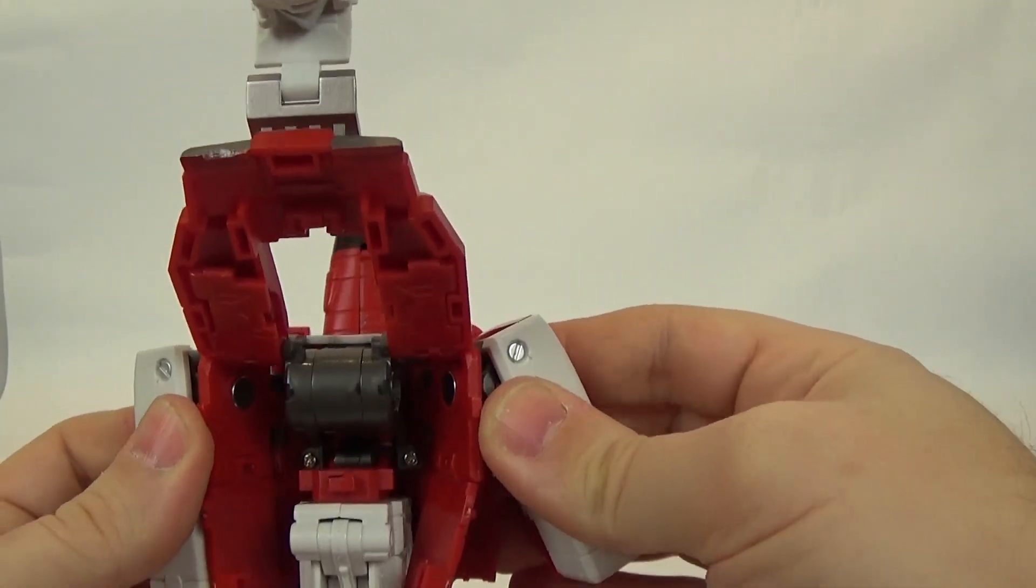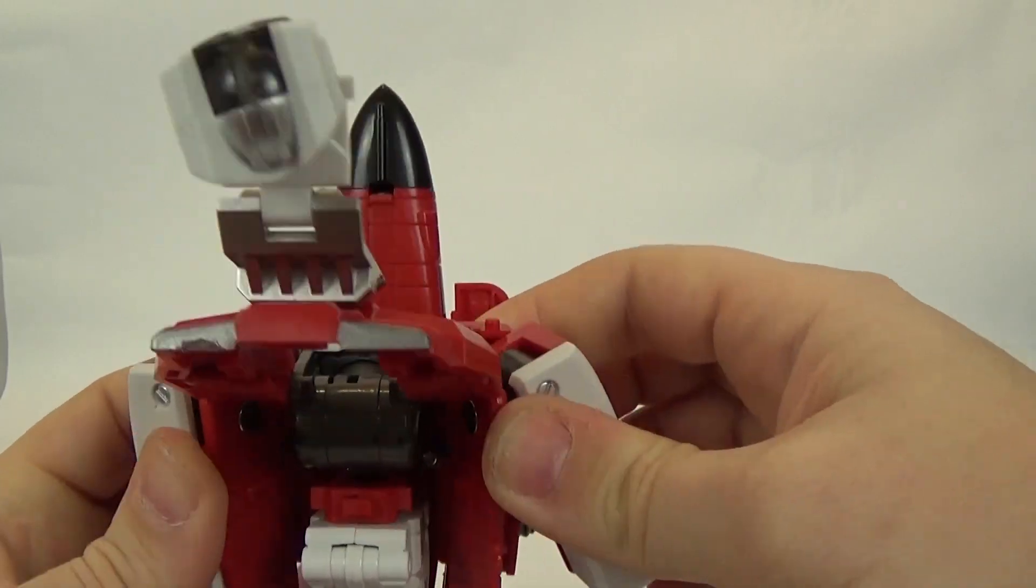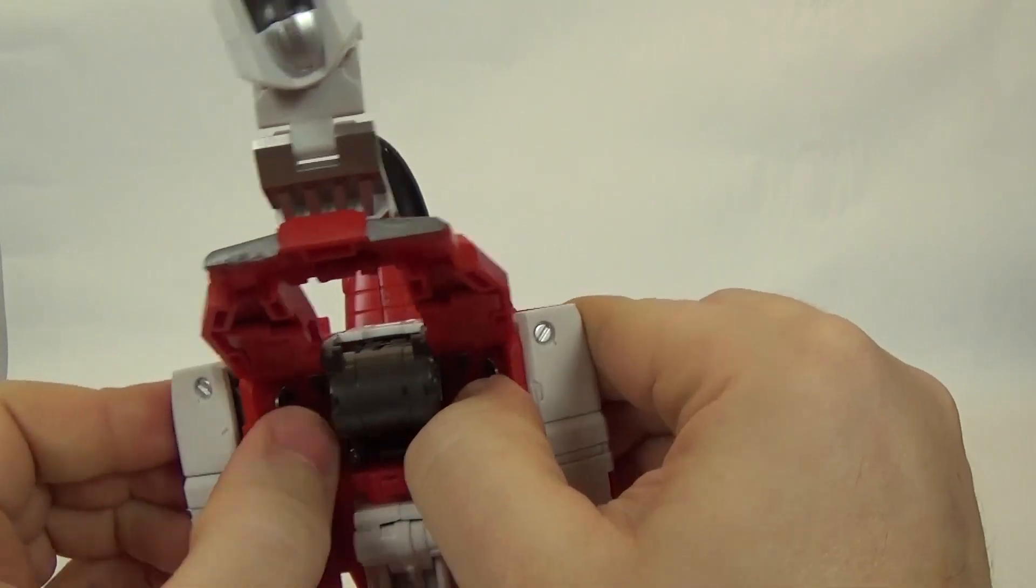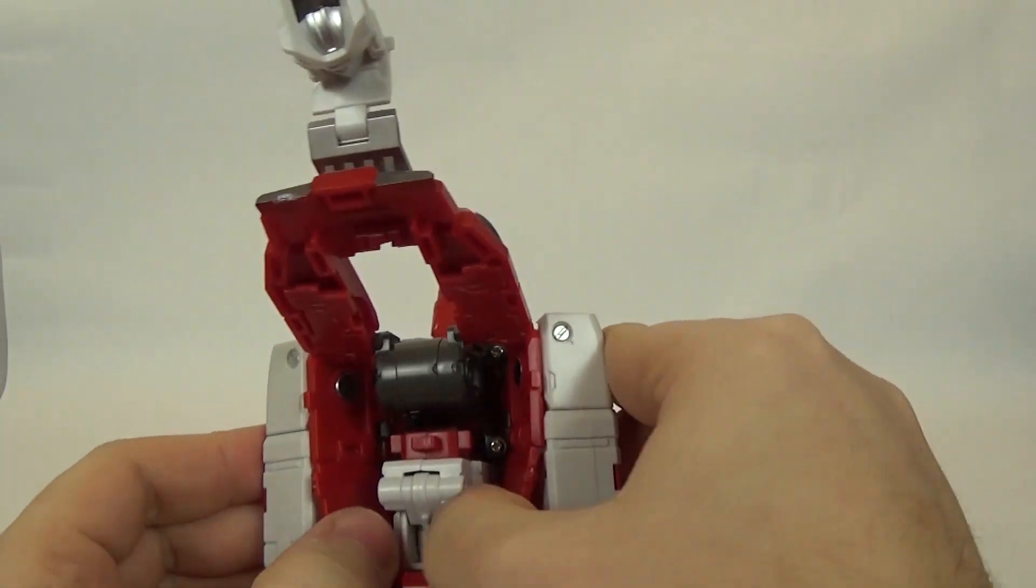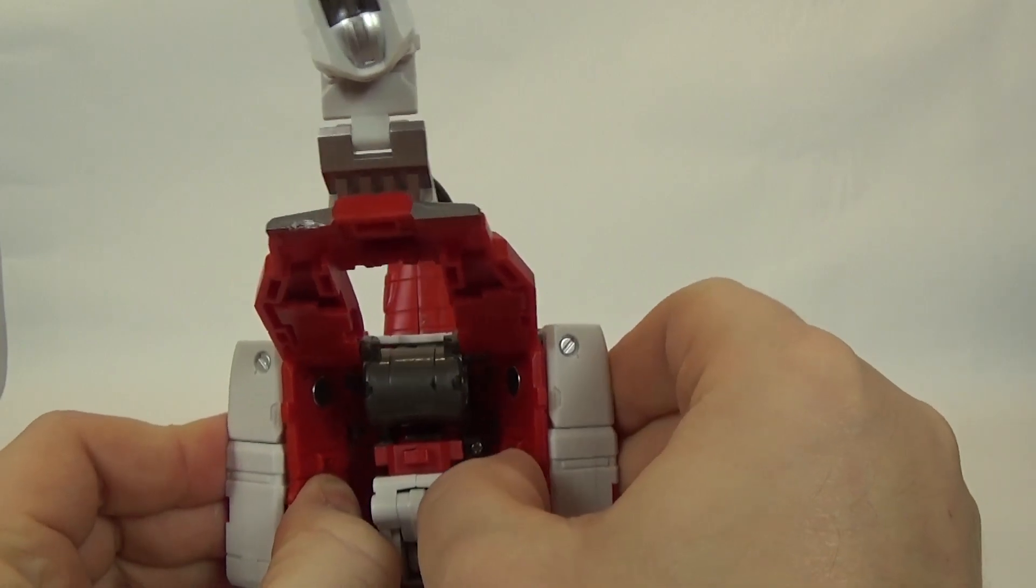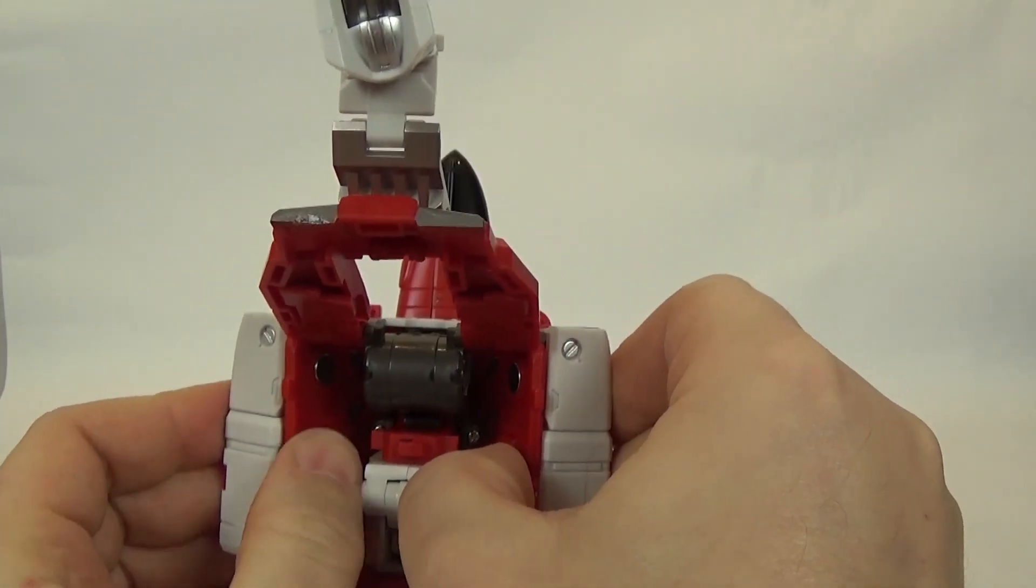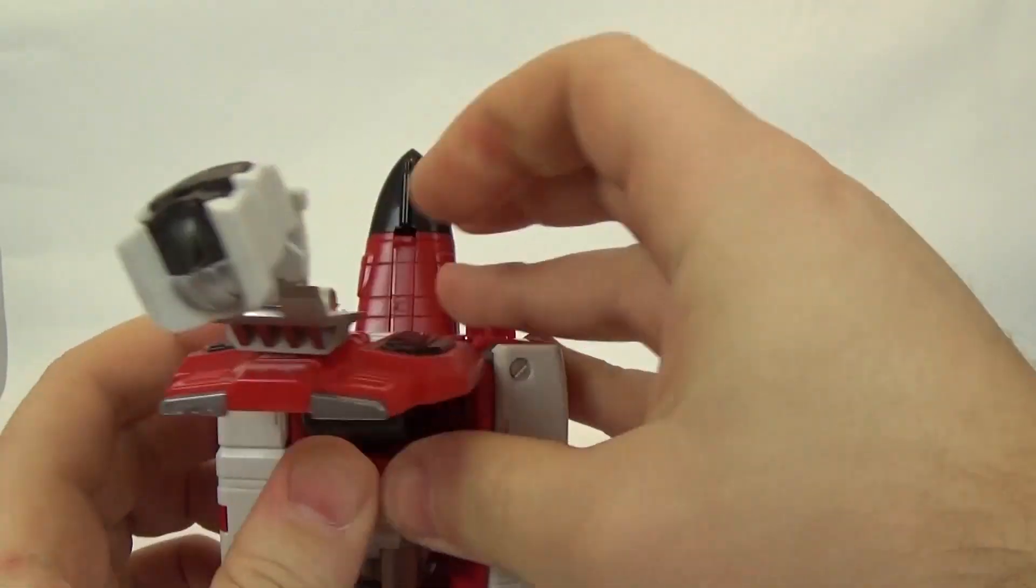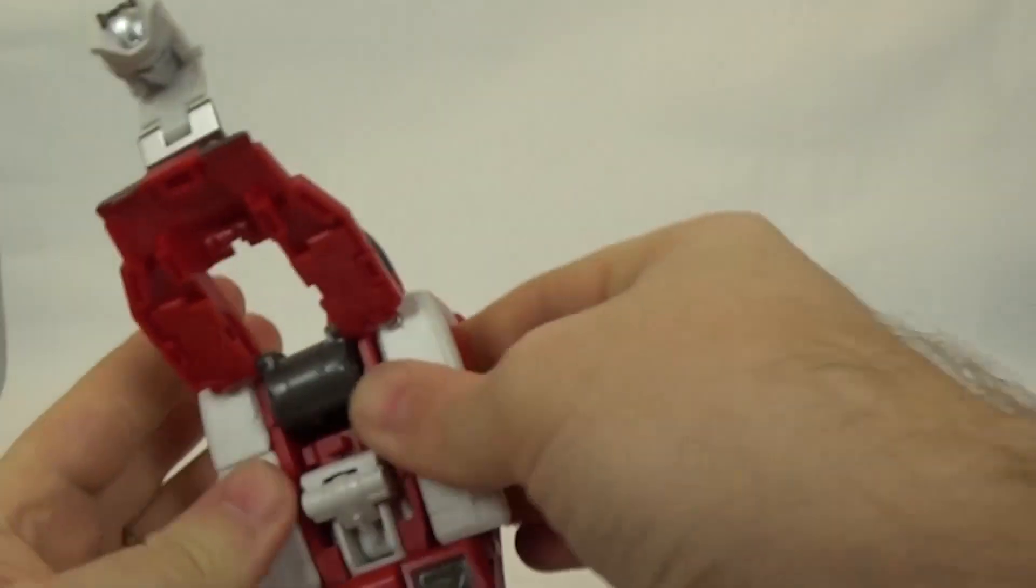And, then, I'm getting to the problem on this guy, at least with my copy. Again, the arms collapse in. And, then, these panels can clip in to the arms right there. And, then, you just got to push them in. And, again, there is some clearance issues with that. But, it's not terrible.